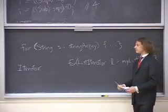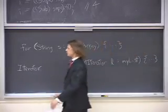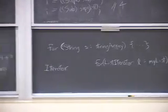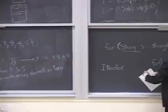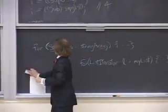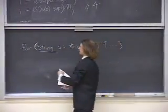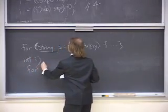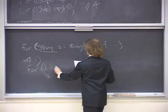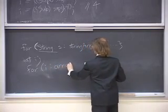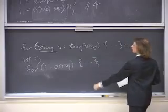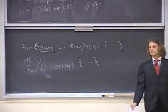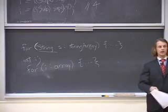One thing about this that I find quirky: you have to put the declaration right inside the for statement, and the compiler complains if you don't. If you try writing int i and then for (i : array), the compiler doesn't like that — you have to actually declare your iterator variable right there inside the for statement.